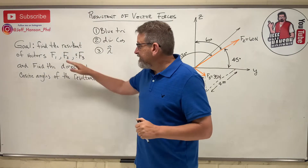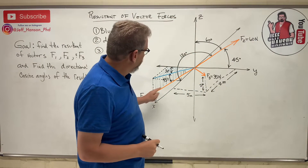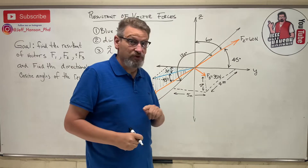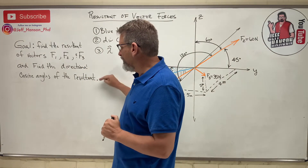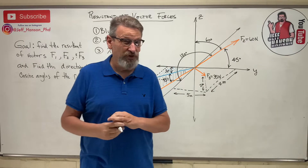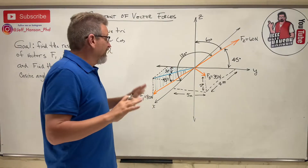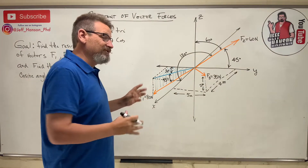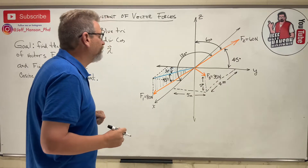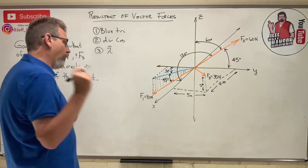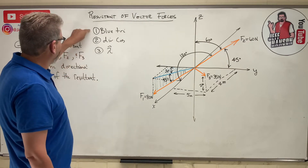The problem says find the resultant of vectors F1, F2, and F3 — there are three orange vectors — and we have to add them together and find the directional cosine angles of that resultant. If we can write these vectors in IJK form, this is going to be a piece of cake. Let's start with vector F1.